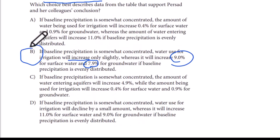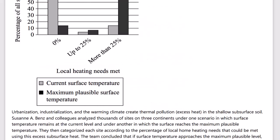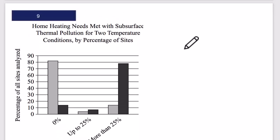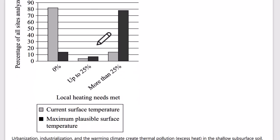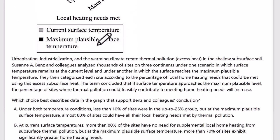Here's another scenario I might not even understand from head to toe. Not only is the chart difficult to read — up to 25, more than 25 percent of home heating needs met with subsurface thermal pollution for two temperature conditions by percentage of sites, current surface temperature, maximum plausible surface temperature — but the paragraph is even more confusing. So what do you do in this case?